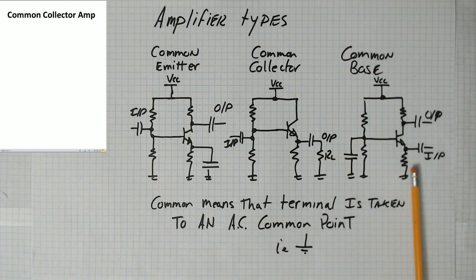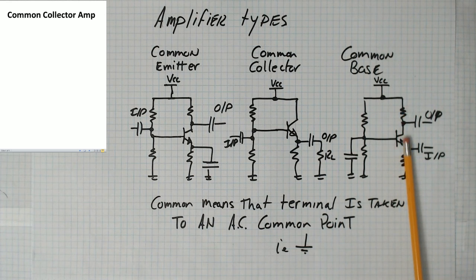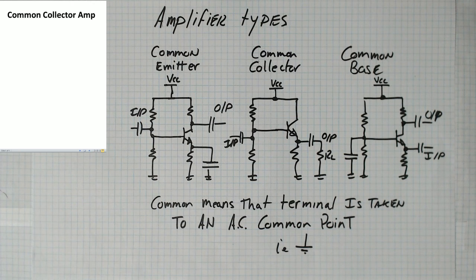The input is applied to the emitter. And then this is wiggled. And then current, if this is grounded, when this wiggles up and down, it pulls current through the base emitter, which gets amplified. And we see that as a voltage output on the collector. So common indicates which terminal in the transistor is taken to an AC common point.